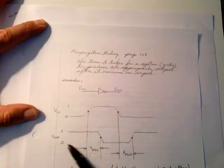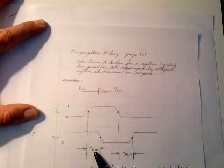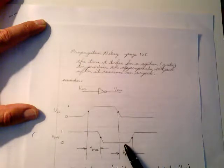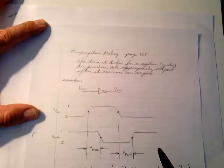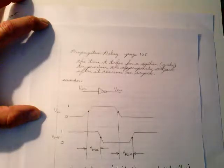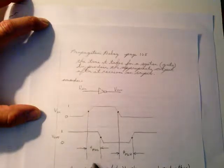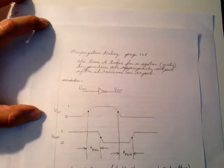Take a look at the output signal here. The output signal is going high to low — that's the high-to-low propagation specification. Here it's going from a low to a high — that's the low-to-high propagation specification. The propagation time high-to-low does not always have to equal the propagation time low-to-high. They're not always equal. Sometimes they are. But don't assume the propagation time is going to react the same going high-to-low versus low-to-high on the output.